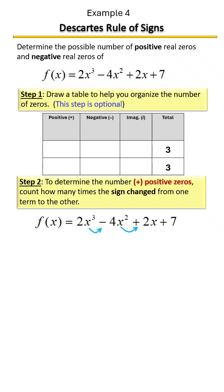Okay, and there were no other changes, so there were just two sign changes. We're going to have a two here for our positive zeros.